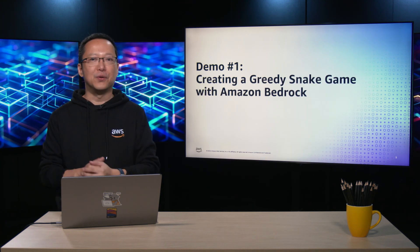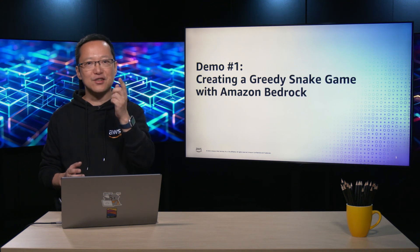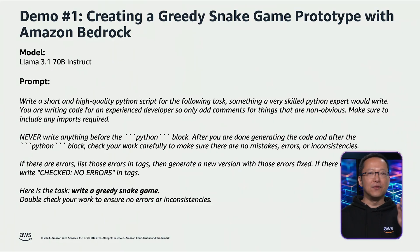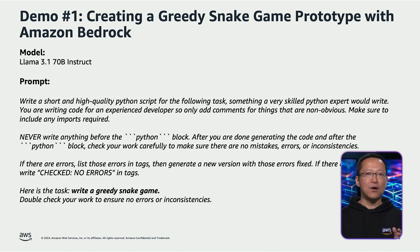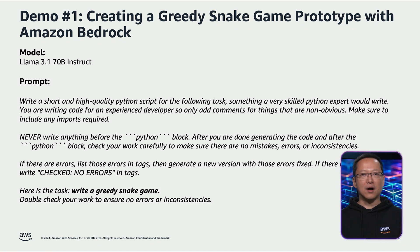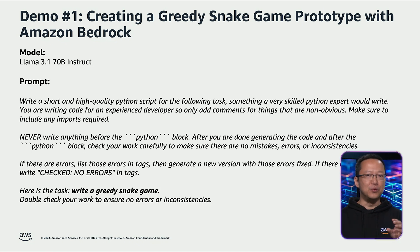Let's go through the prompt we intend to submit to the large language model. This is the prompt crafted for demo number 1. The prompt provides specific instructions for the model to follow when writing the code. For example, the code should be written assuming the intended reader is an experienced developer, so only ambiguous portions should have comments included. Importantly, the prompt directly states that no code should be generated before the triple-quoted Python block. After generating the code within that block, the model must carefully review its work to ensure there are no mistakes.